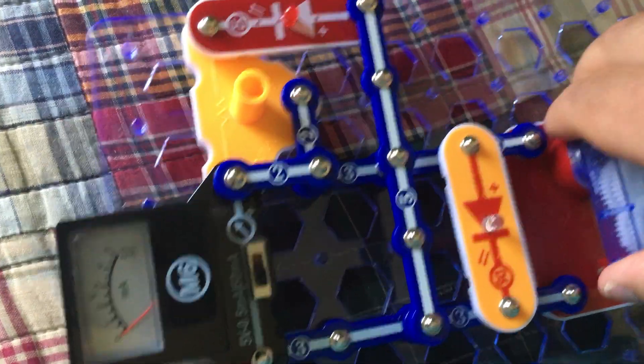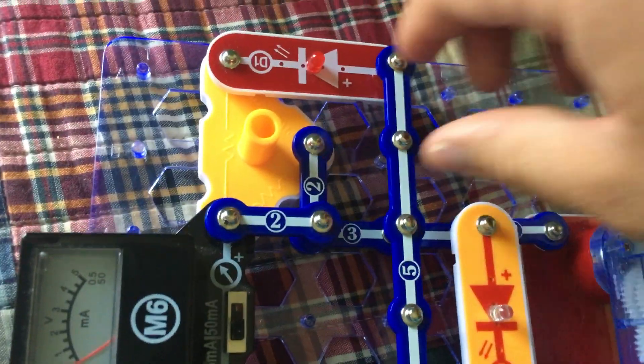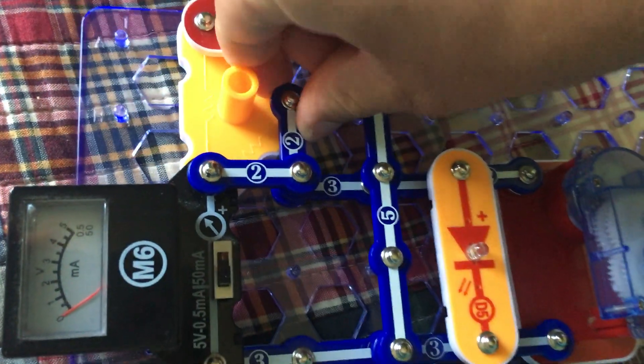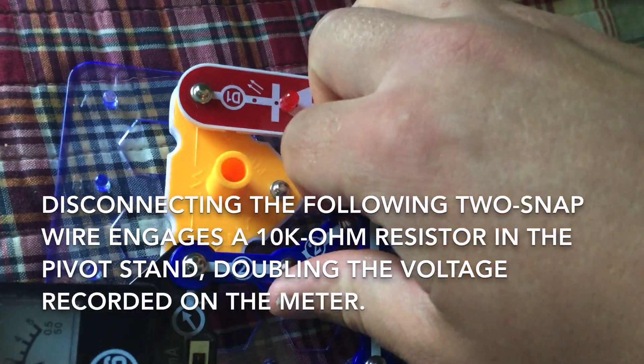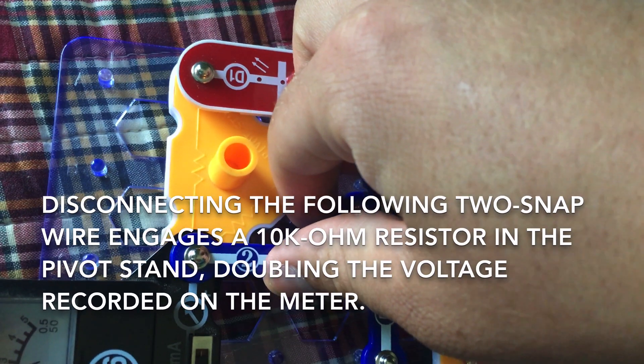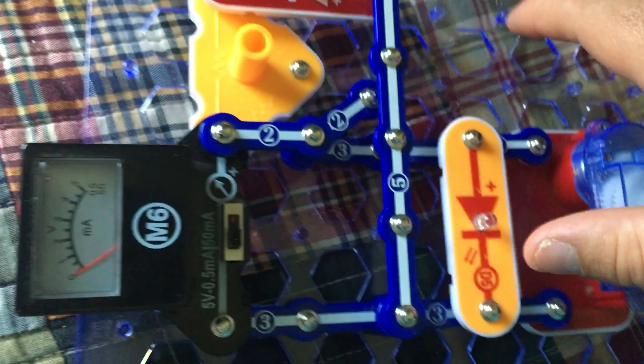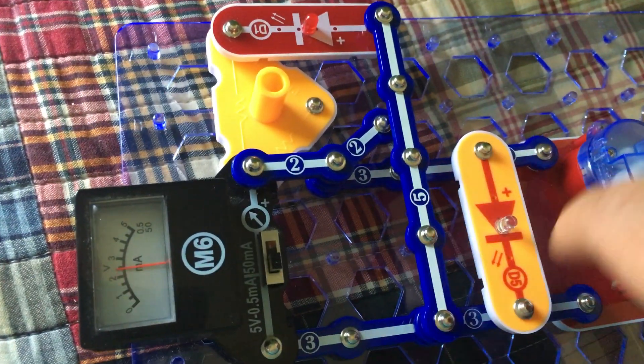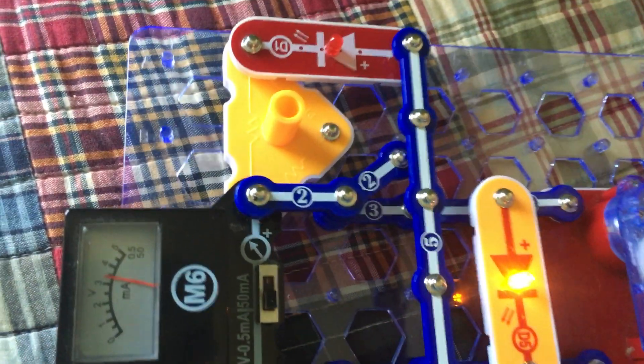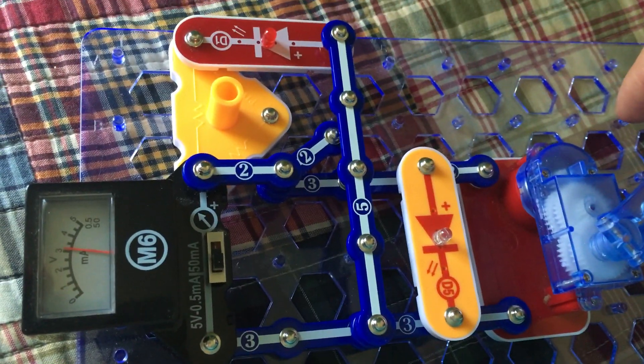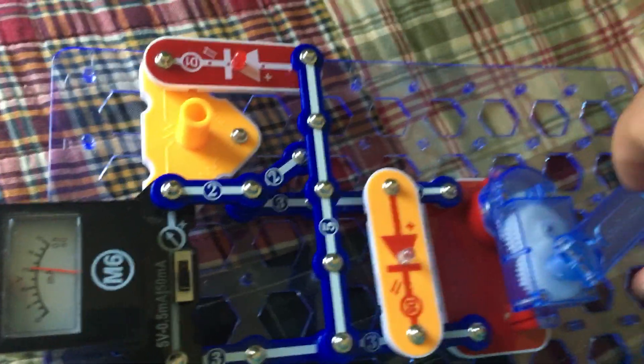And, then, if I was to disconnect this 2-snap wire, a 10,000 ohm resistor will be included, and so now the voltage produced would be doubled. So, if I was to reach 10 volts, 5 volts, it would really be 10 volts.